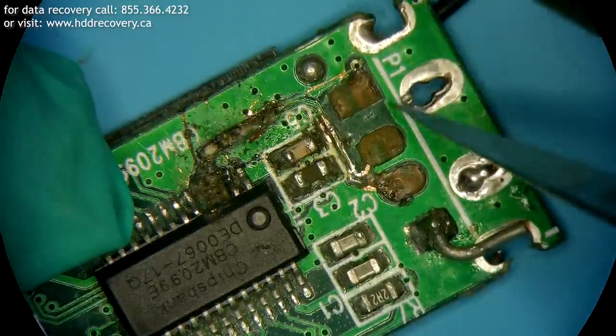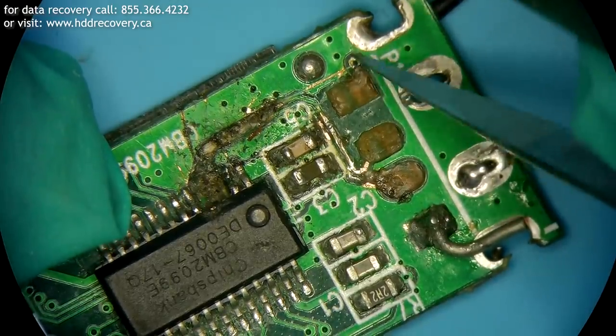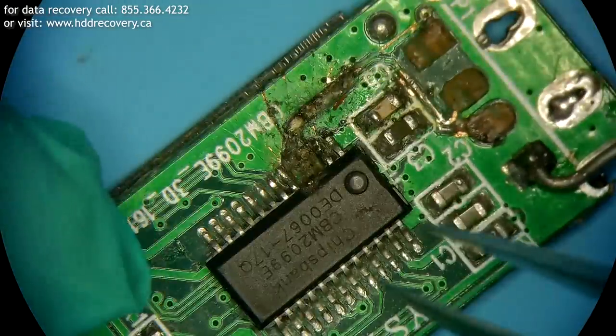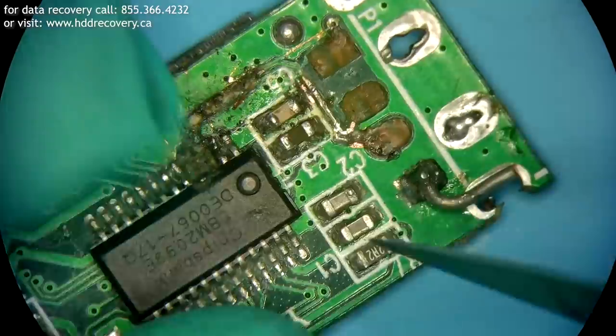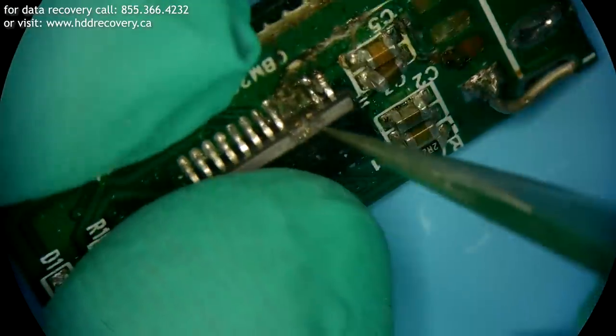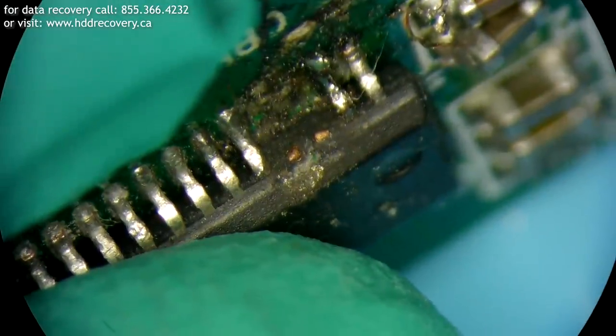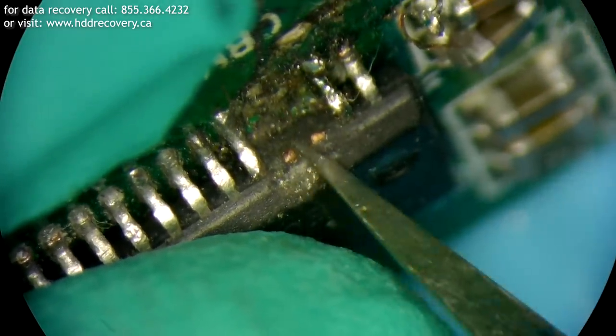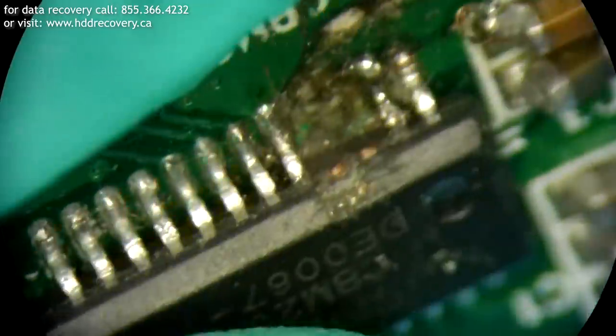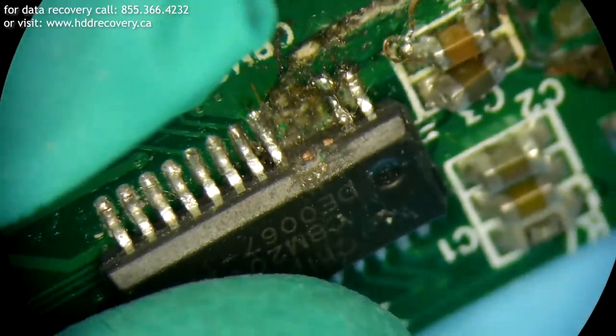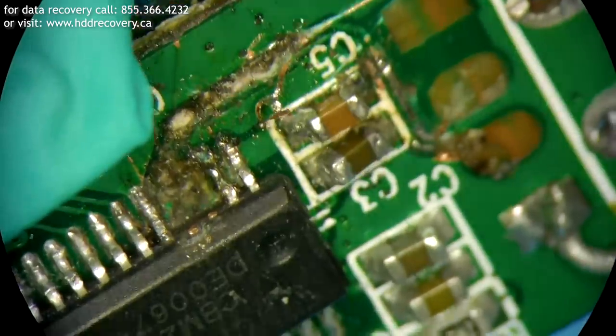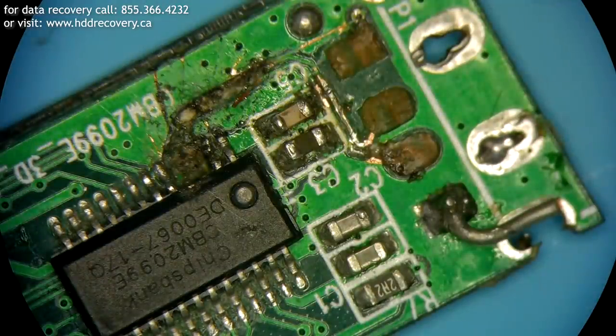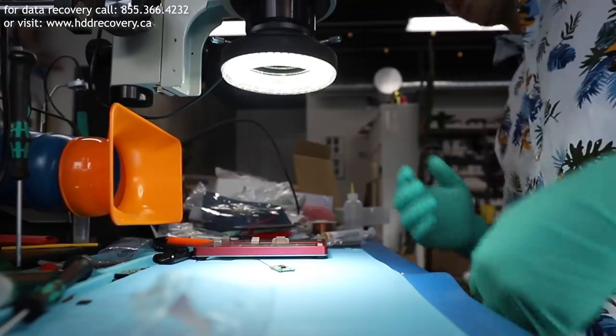But looking at the circuitry overall, it's not very complicated, and it seems to me that if we wanted to, we could just pretty much redo the connections. And even though those two headers are missing on the controller, we can attach small gauge wire directly to them to make the unit functional. What I'm not sure about is the main cause of the problem. Why did it stop working in the first place?